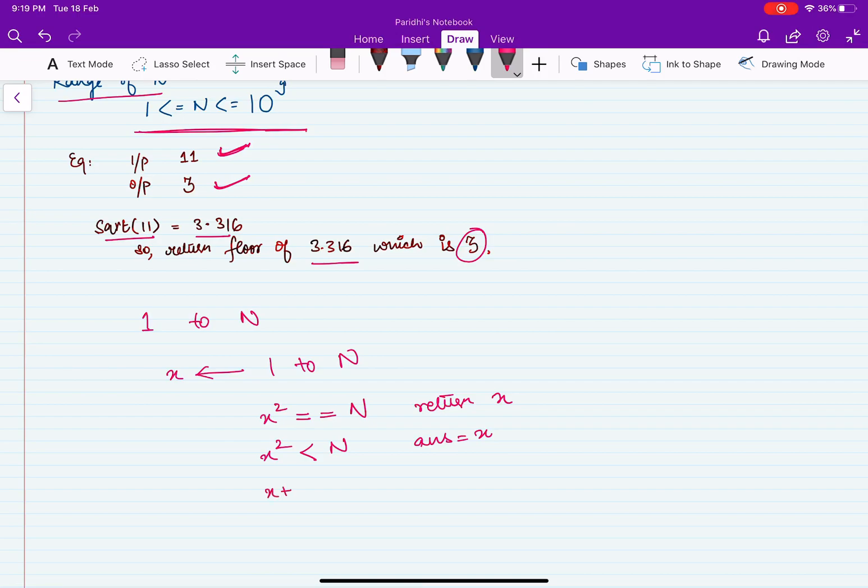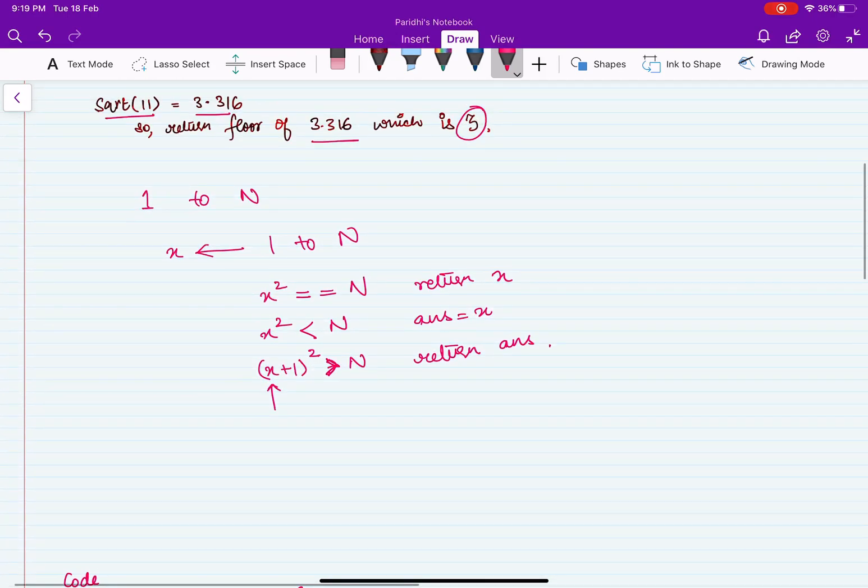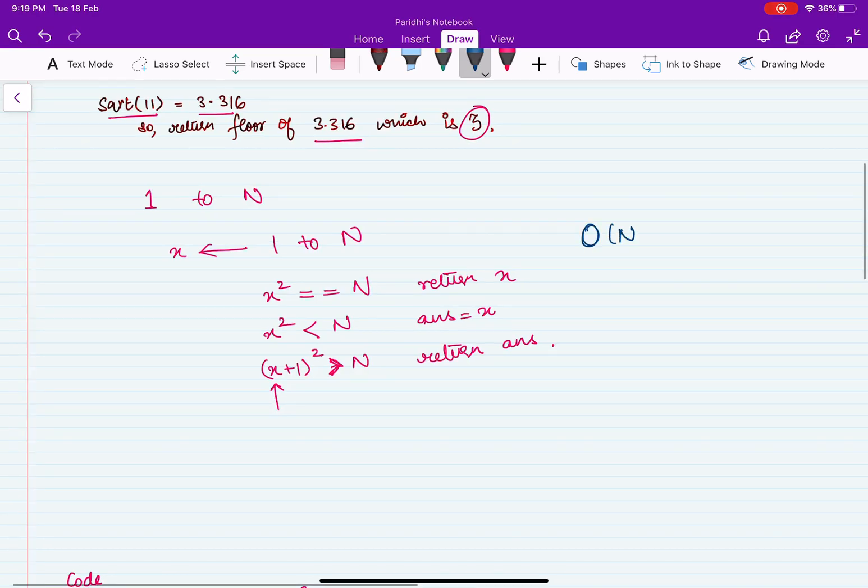And we will check for higher values of x. Let's say some x plus 1, so the value just greater than x becomes greater than n, the square of it becomes greater than n. So we know the previous value did satisfy, so we will return the stored answer. Because any x greater than this will not satisfy the condition. Let's see how we can optimize this problem because this will give a time complexity of order of n, linear time complexity.